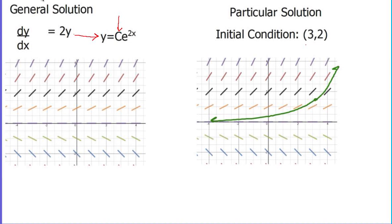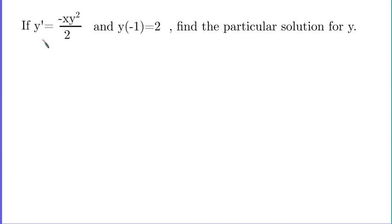Let's take a look at how this works in practice. Here's a problem. If y prime equals negative xy squared over 2, and y at negative 1, the y value is 2, then find the particular solution. Keep in mind that this part over here basically describes the slope field, and as soon as you have the point, then you have a curve channeling through that dot that follows the slope field. So how does that work algebraically?